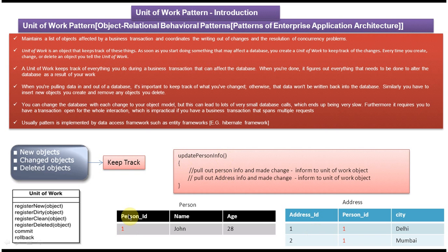Suppose we want to update the person information. We pull out the person info, make the change, and as per the Unit of Work design pattern, we just inform the unit of work. We also want to change the address, so we pull the address information, make some change, and then just inform the unit of work object. At the end, the unit of work object is responsible for saving person and address information in the database in a sequential way.